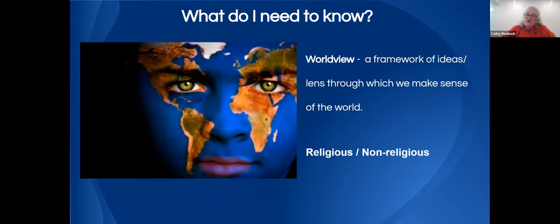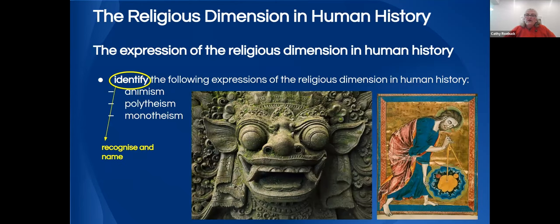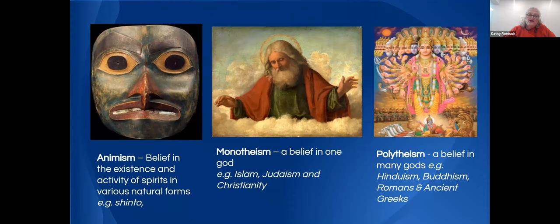Religion has played a part in history from the very beginning. We're asked to identify animism, polytheism and monotheism. Animism is a belief in the existence or activity of spirits in all things — mountains, rivers. Our indigenous community holds this notion, as does the Japanese religion of Shinto, which believes in spirit beings present in landscapes and other objects.